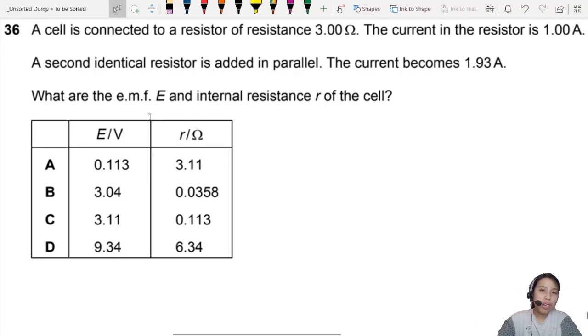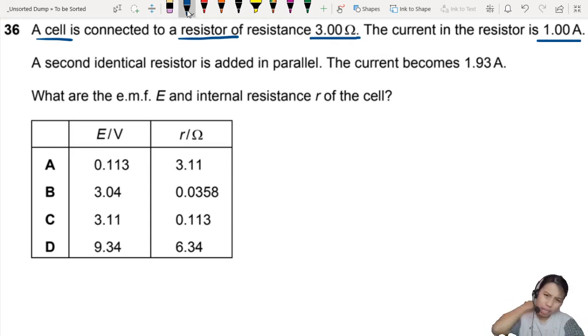This question will need you to do some math. Stay tuned! A cell is connected to a resistor of resistance 3 ohms. The best thing to do if they didn't give you a circuit picture is to draw the picture.